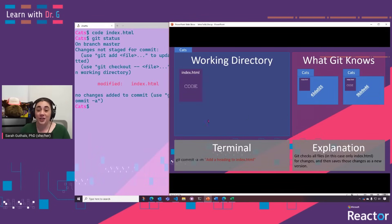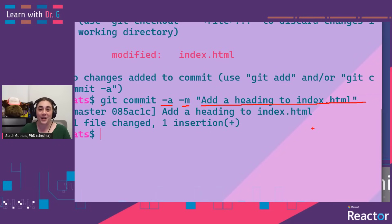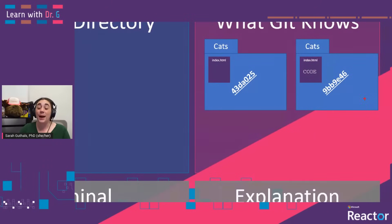To do that, we need to do another commit. In this case, we did git commit with dash a instead of specifying index.html. Dash a lets Git know that we want all of the files that have been changed, deleted, or added to be saved in the new version of that repository. We're still going to add a message: 'add a heading to index.html'. Now Git knows about the two different versions committed so far — one with an empty index.html and one with some code in it.